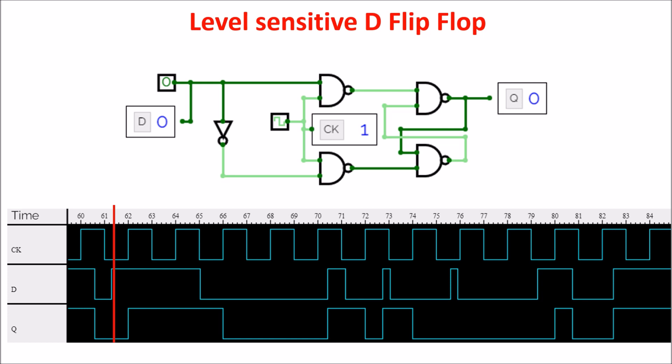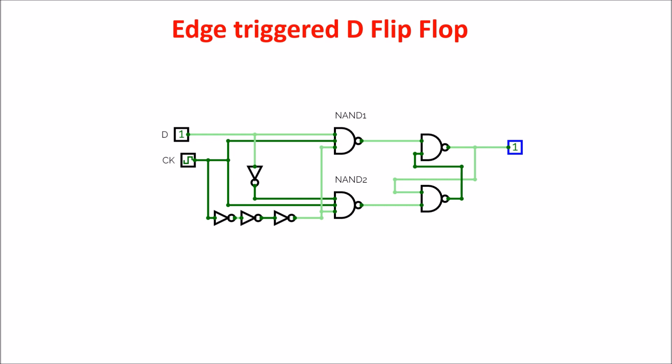Here for example you see that if D input goes to 1 and comes back to 0 during the 0 clock period, Q output loses completely this transition. This circuit is called level sensitive D flip-flop because the output can be changed only on the high level of the clock signal. Now we modify our circuit in such a way we read the input D only on the rising edge of the clock.